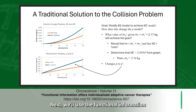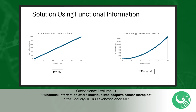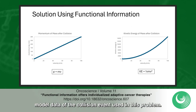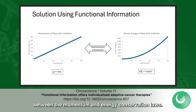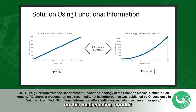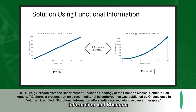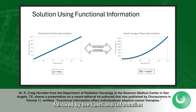Next, we'll use the functional information method to solve this problem. Here are graphs of the momentum and kinetic energy model data of the collision event used in this problem. There is a mathematical connection between the momentum and energy conservation laws. Functional information is exchanged on this mathematical conduit, because the models describe the same event. Next, the relationship between functional information and Shannon information entropy is presented, followed by the functional information methodology used to solve this problem.